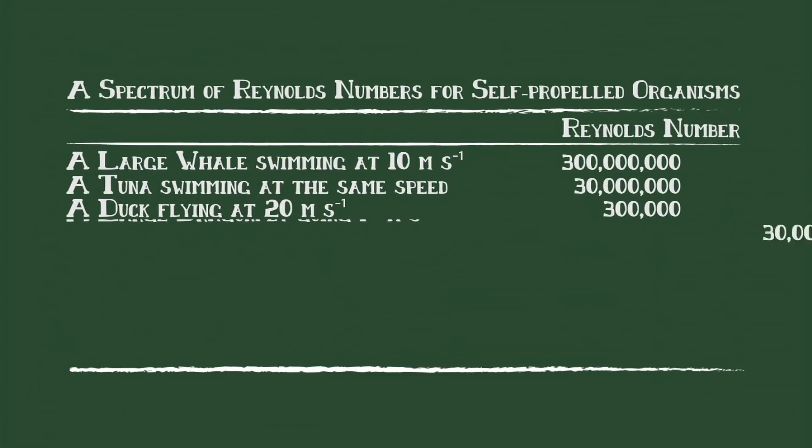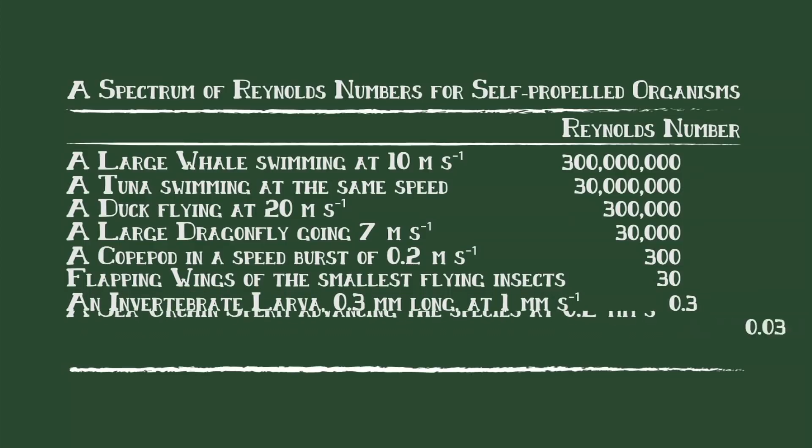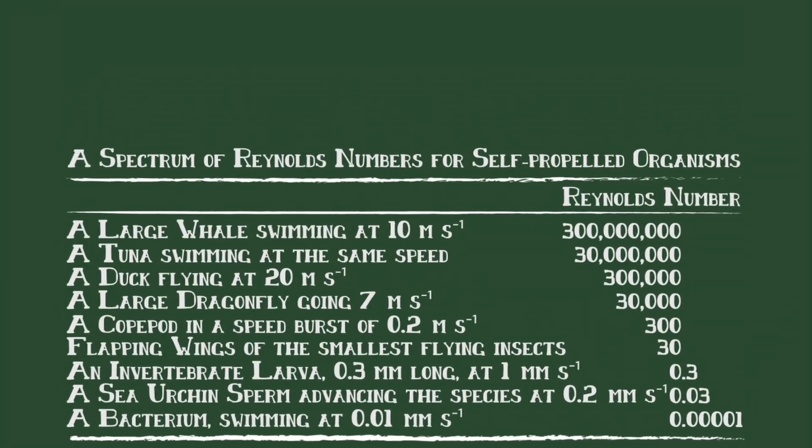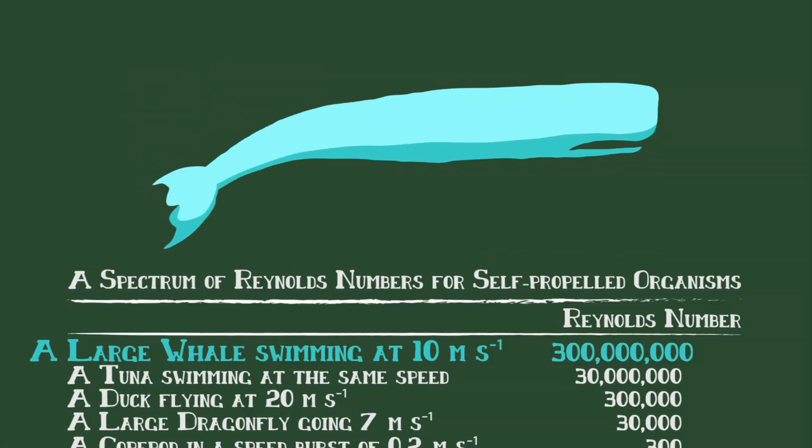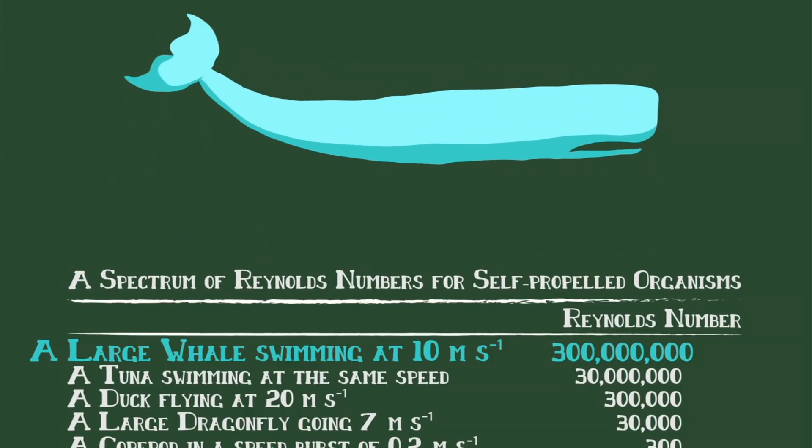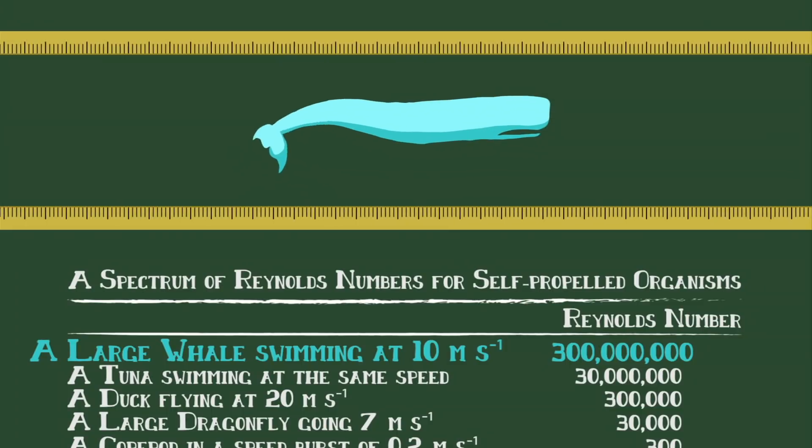What this means is that creatures of very different sizes inhabit vastly different worlds. For example, because of its huge size, a sperm whale inhabits the large Reynolds number world. If it flaps its tail once, it can coast ahead for an incredible distance.